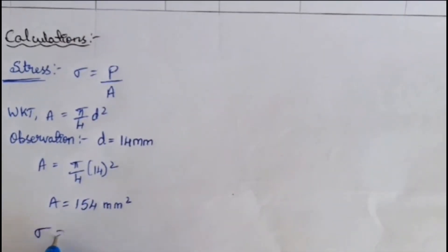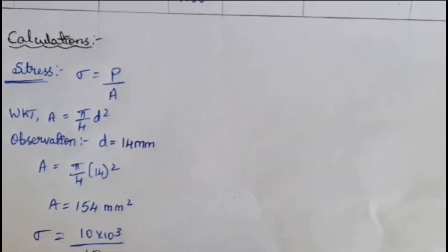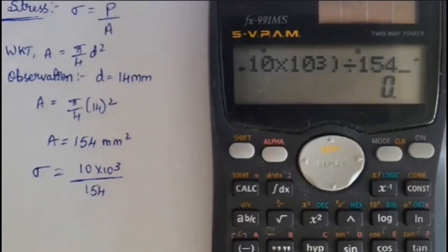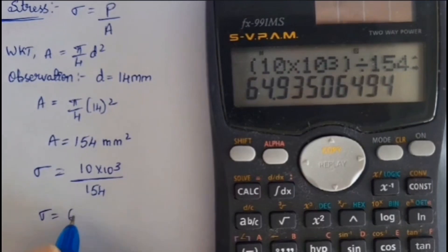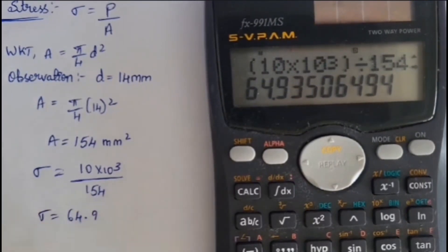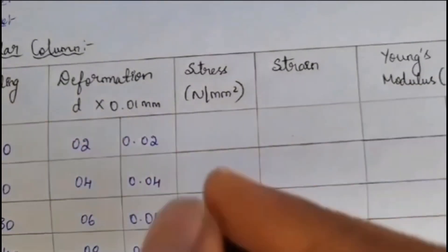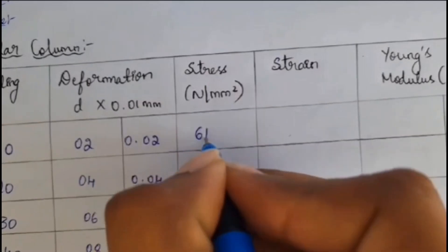Next, after that, we will be substituting sigma is equal to P by A. That is, first experiment, we will be considering that 10 kilo Newton. 10 into 10 to the power of 3 divided by 154. So, by calculating that, we will be getting 64.9 Newton per mm square. This is the value for first reading.